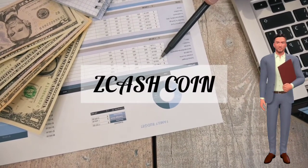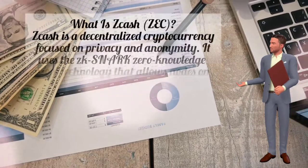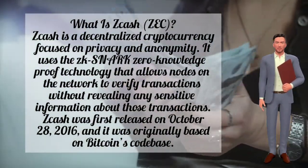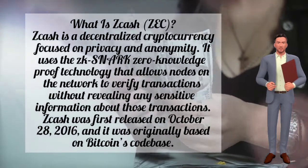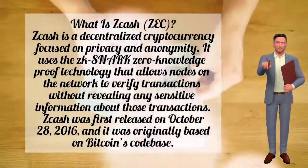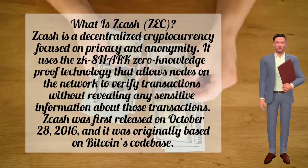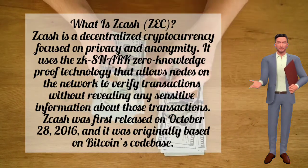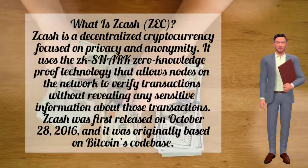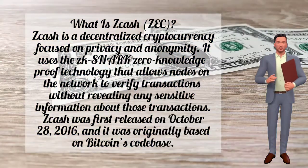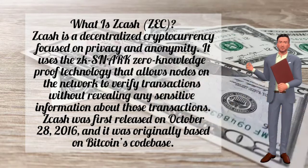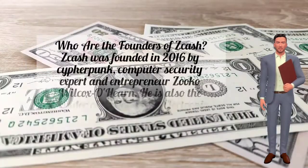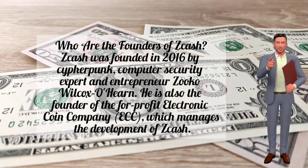What is ZCash? ZCash is a decentralized cryptocurrency focused on privacy and anonymity. It uses zk-SNARK (zero-knowledge proof) technology that allows nodes on the network to verify transactions without revealing any sensitive information about those transactions. ZCash was first released on October 28, 2016, and was originally based on Bitcoin's codebase.